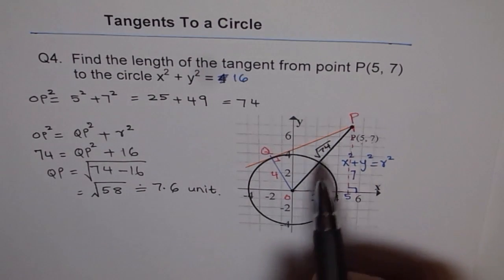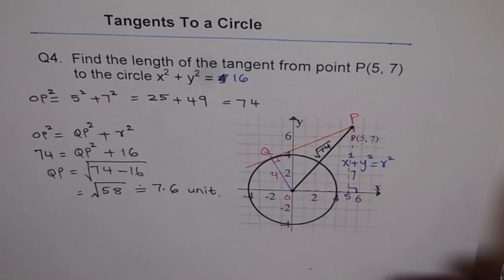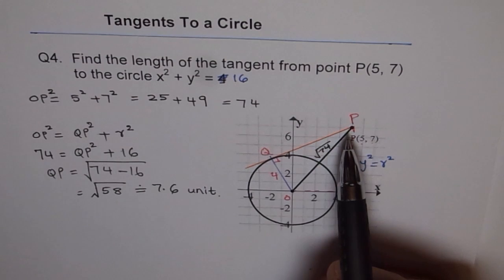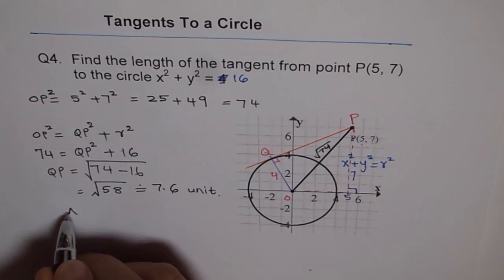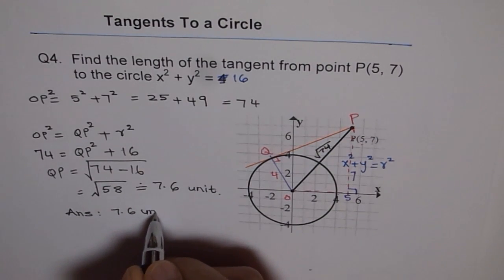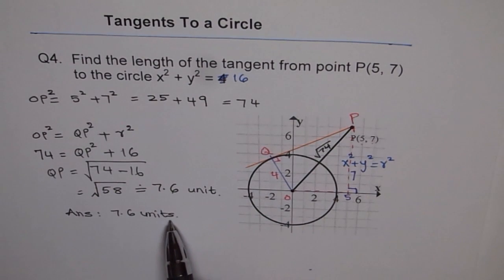Now, it is important to see here that we don't really need the coordinates of point Q, and still we can find the length of the tangent from a given point outside the circle. That's the beauty. So our answer here is 7.6 units. If no units are given, there is no harm in writing just the number with the units. Thank you.